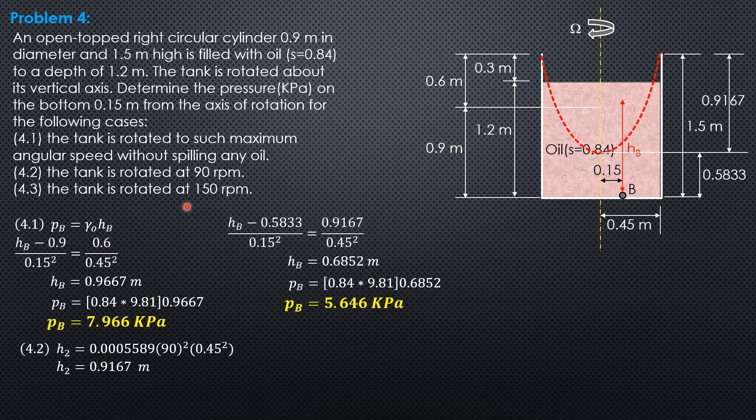When the angular speed is 150 rpm, substitute into this formula. H3 equals 0.0005589 times 150 squared times 0.45 squared. Then it is equal to 2.546 meters, which is greater than 1.5. So the parabolic surface will extend beyond the bottom center and therefore a portion of the bottom will be exposed.